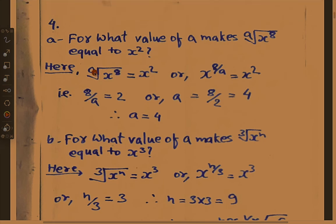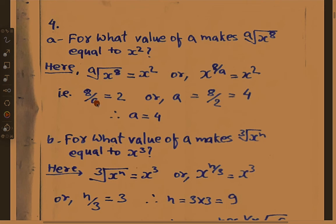It becomes 8 into 1 upon a, or 8 upon a. So x power 8 upon a equals x squared. Since base is same — x equals x — powers shall be equal, so 8 upon a equals 2. Inverting, a equals 8 upon 2 equals 4. Therefore the value of a equals 4.